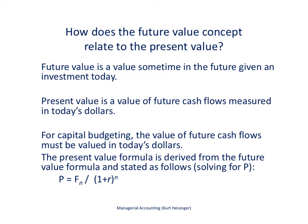What we need to do next is tie this to capital budgeting by taking that future value concept and then determining how to find the present value of future cash flows. The future value is a value sometime in the future given an investment today. If we use a timeline, zero represents today, year one is here, and out here is year two. If we are trying to find the future value, we look at some cash flow happening today — some investment today — and take a look at what that would be in a couple of years. The question mark on the timeline represents the future value.